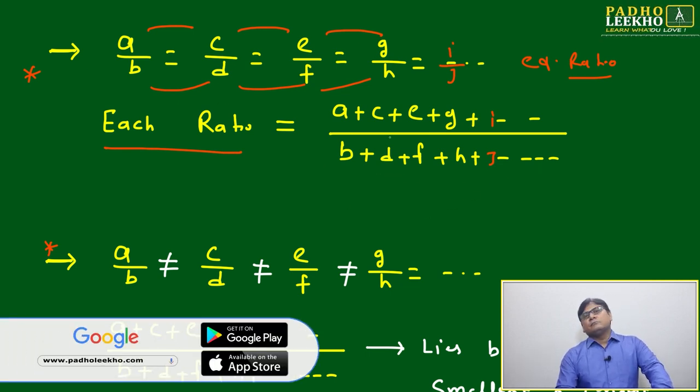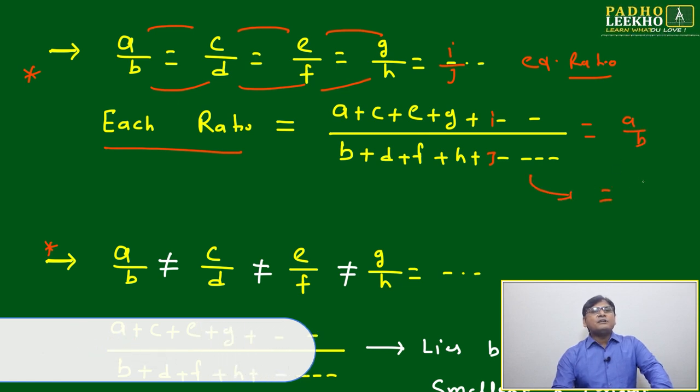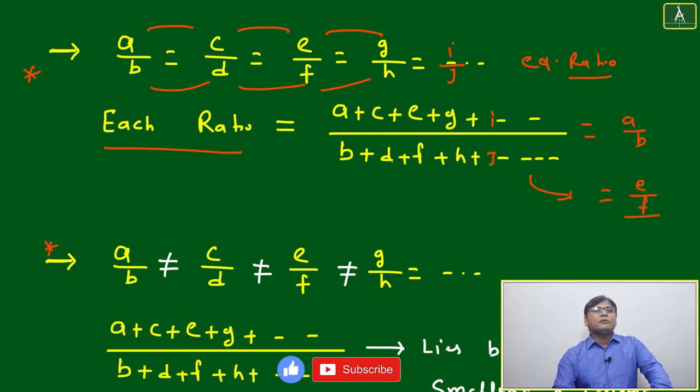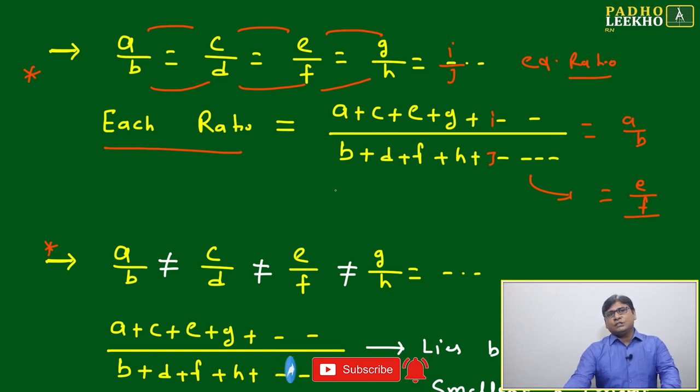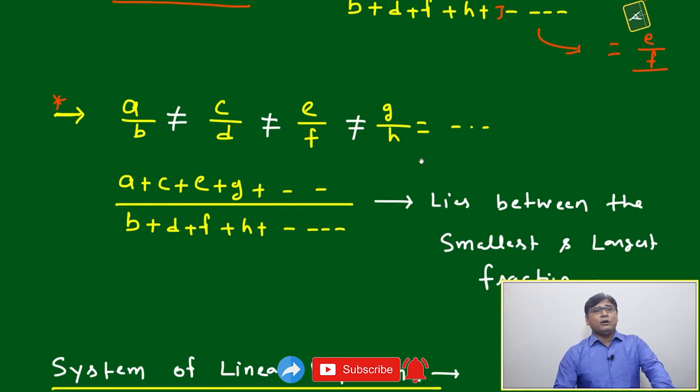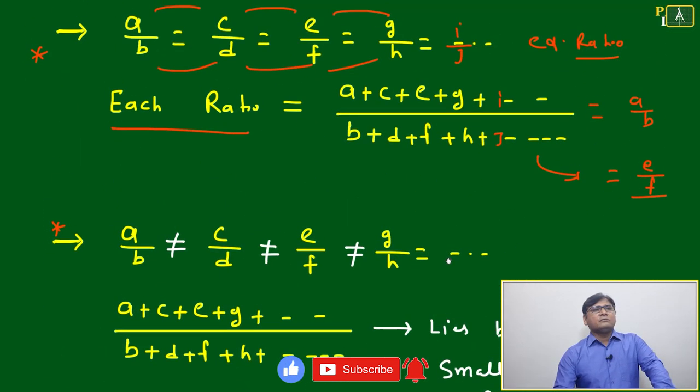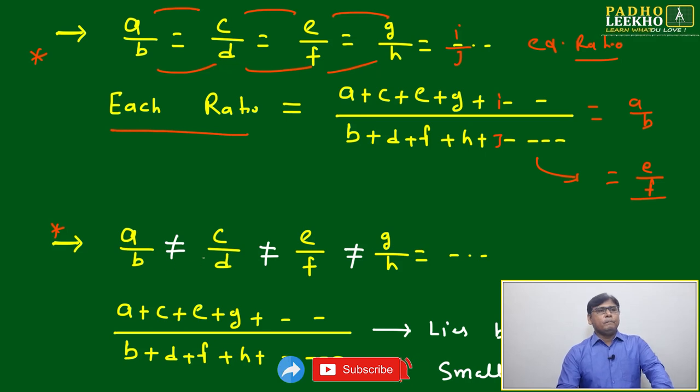All ratios either you can write equal to a by b, or the same ratio you can write equal to e by f. All ratios will be equal to this combined ratio, and this is going to help a lot to solve questions.